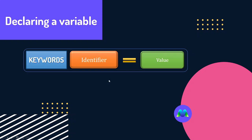If you want to use the identifier, you can use the identifier as well, and it is equal to the assignment operator.